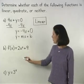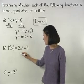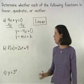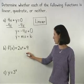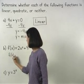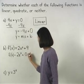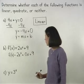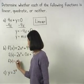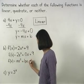In Part B, to determine whether the function f of x equals 2x squared plus 9 is linear, quadratic, or neither, notice that f of x equals 2x squared plus 9 can be written as f of x equals 2x squared plus 0x plus 9, which is in the form f of x equals ax squared plus bx plus c.